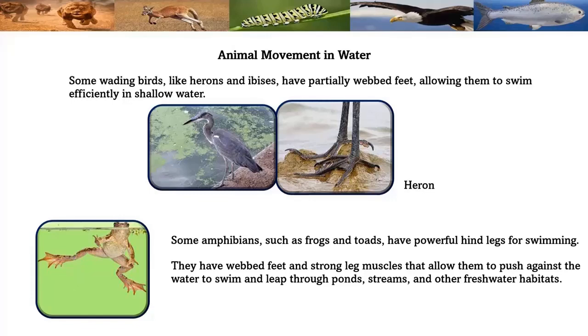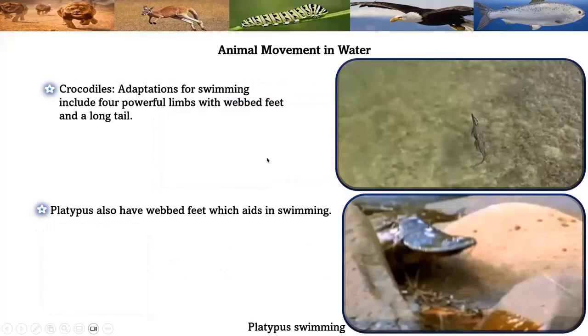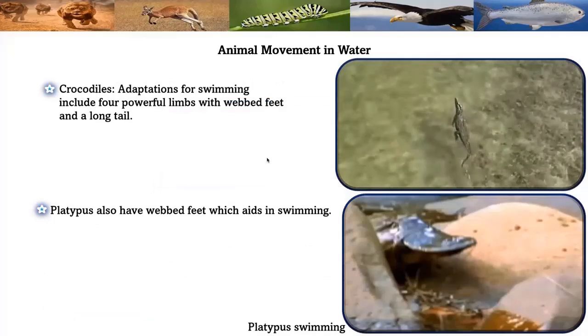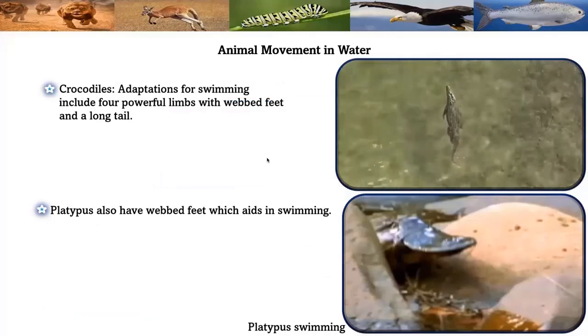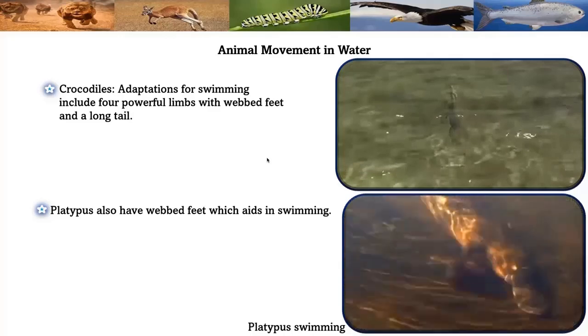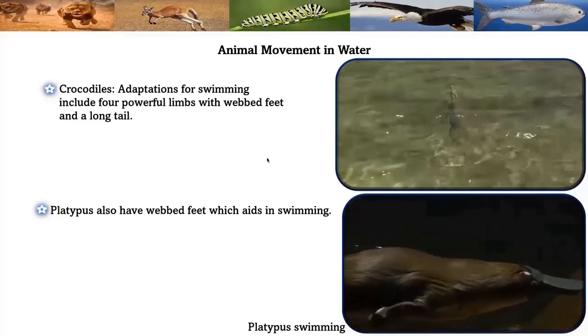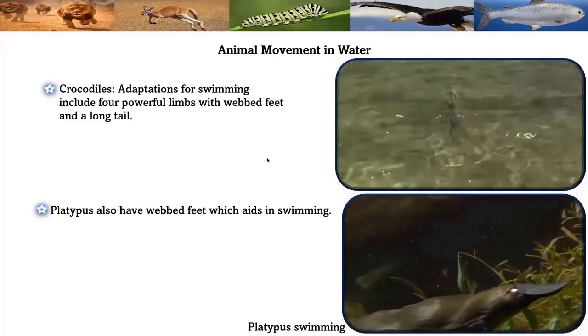Crocodiles' adaptations for swimming include four powerful limbs with webbed feet and a long tail. Platypuses also have webbed feet which aid in swimming.